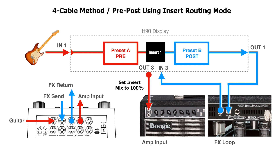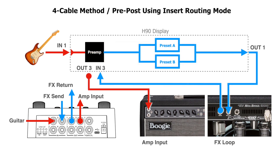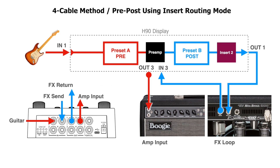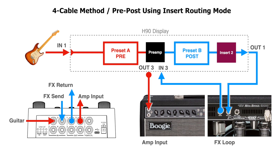Because we are using an insert on the H90 to route signal to the amp, we can position algorithms anywhere in the signal chain — think of insert 1 as the amp's preamp section. We can have two algorithms in front on one program, two in the effects loop on another, or one in front and one in the back. We can even introduce another outboard effect anywhere in the chain with the second H90 insert. The downside is that if we bypass the insert providing the connection to the front of the amp, or it gets disconnected, we may lose the signal completely. For this reason it may be best to use the global dual routing mode for pre-post four cable method connections.